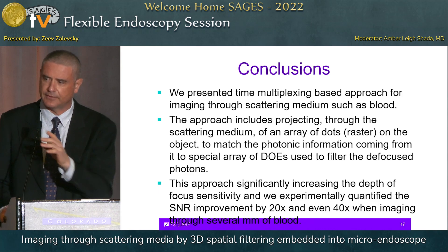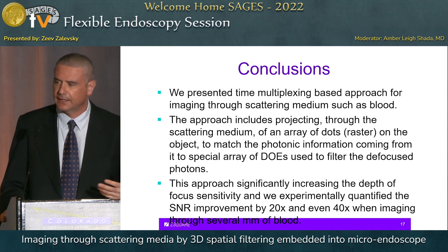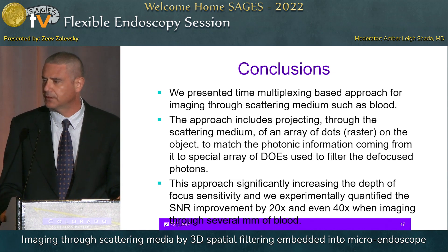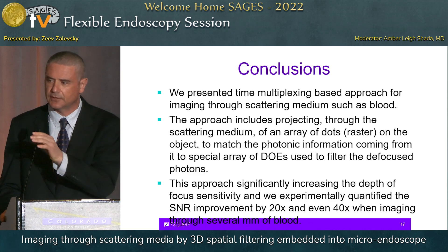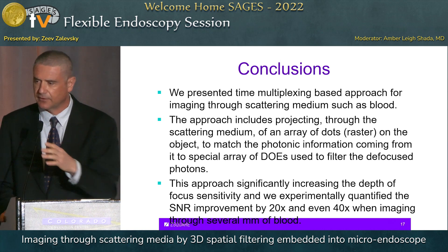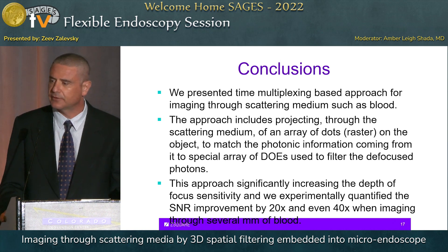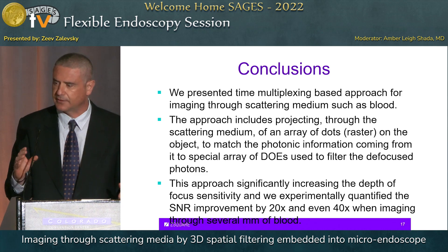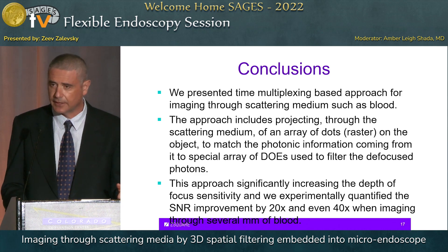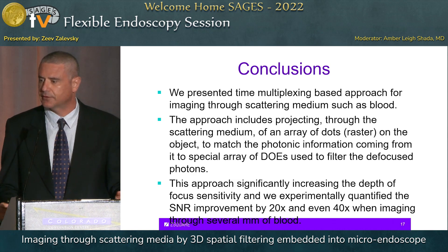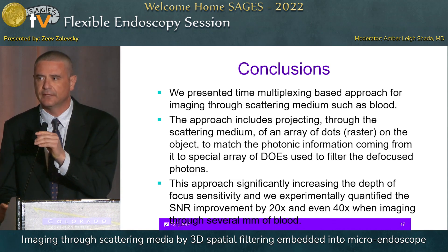To conclude, I showed a time-multiplexing concept based on imaging through scattering medium such as blood. The approach projects a raster of dots through the scattering medium onto the object, matching this array with a special array of diffractive optical elements that filter the defocused photons. This significantly increases depth-of-focus sensitivity, and we experimentally demonstrated SNR improvements by factors of 20 to 40 for imaging through several millimeters of blood. Thank you for your attention.